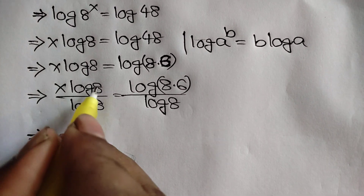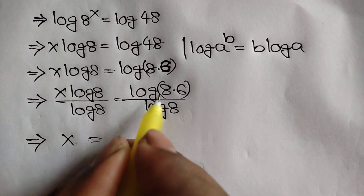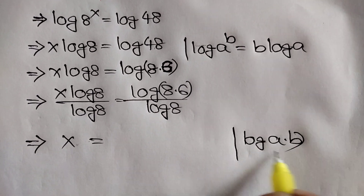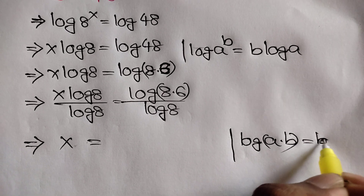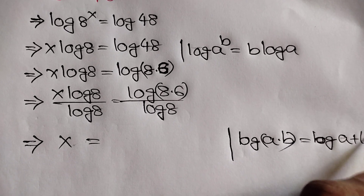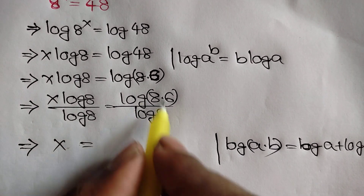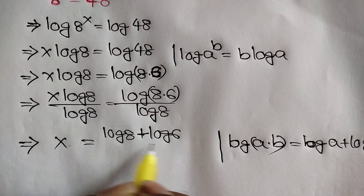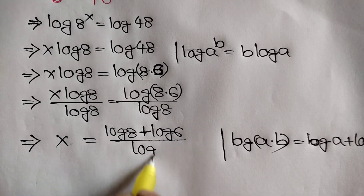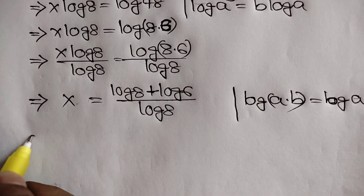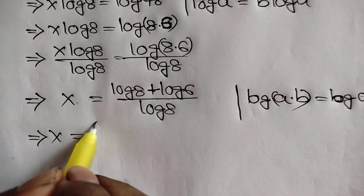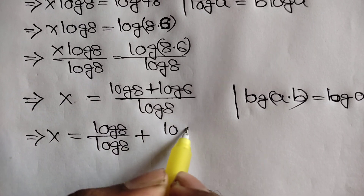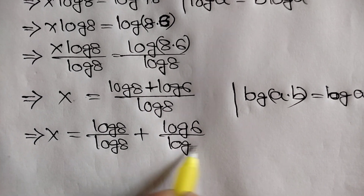This log of 8 cancels with this log of 8, so it will be remaining x is equal to. We know log of a times b is equal to log of a plus log of b. Applying this rule, we can write log of 8 plus log of 6 over log of 8. Or x is equal to log of 8 over log of 8 plus log of 6 over log of 8.